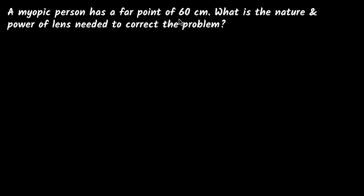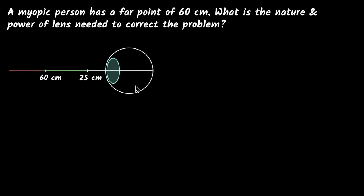We're given that a myopic person has a far point of 60 centimeters. What is the nature and the power of the lens needed to correct the problem? Let's first try to draw a figure. The person's myopic eye has a far point of 60 centimeters, meaning he cannot see anything farther away than 60 centimeters. Myopia means nearsightedness — he can see things close by but not far away. In this problem, this person can see anywhere between 25 to 60 centimeters. The normal eye can see from 25 centimeters all the way to infinity, but this myopic person can only see between 25 and 60 centimeters.